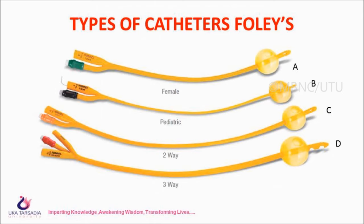There are mainly four types of Foley catheter: Image A is the female Foley catheter, image B is the pediatric Foley catheter, image C is the 2-way or 2-lumen catheter, and image D is the 3-way or 3-lumen Foley catheter.